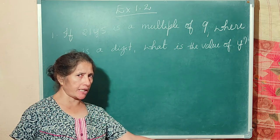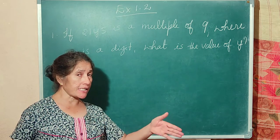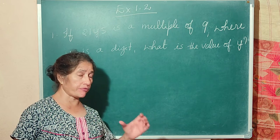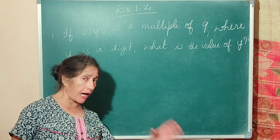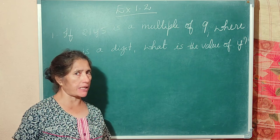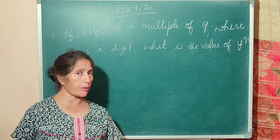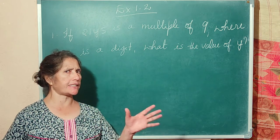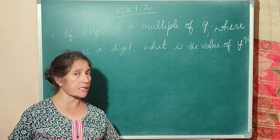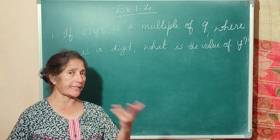It is divisible by 3 if the sum of the digits is divisible by 3. Divisible by 4 if you take the last two digits as a number and it is divisible by 4, then the number is divisible by 4. The number is divisible by 5 if the last digit is either 0 or 5. The number is divisible by 6 if the number is divisible by both 2 and 3.